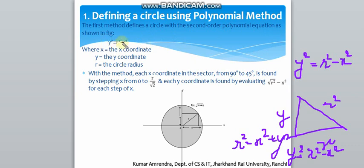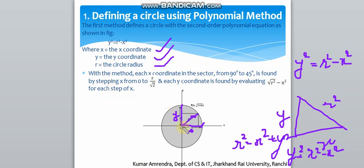Here x is the x-coordinate, y is the y-coordinate, and r is the radius. The distance from the center to the circumference is equal in all 360 degrees, so the radius of each point on the circle is equal.